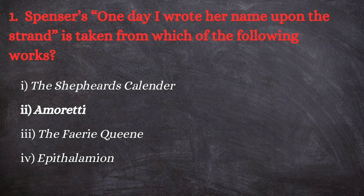Let's move on to the questions. First question: Spenser's 'One day I wrote her name upon the strand' is taken from which of the following works? Options are: first, The Shepherd's Calendar; second, Amoretti; third, The Faerie Queene; and fourth, Epithalamion. The correct answer is Amoretti.